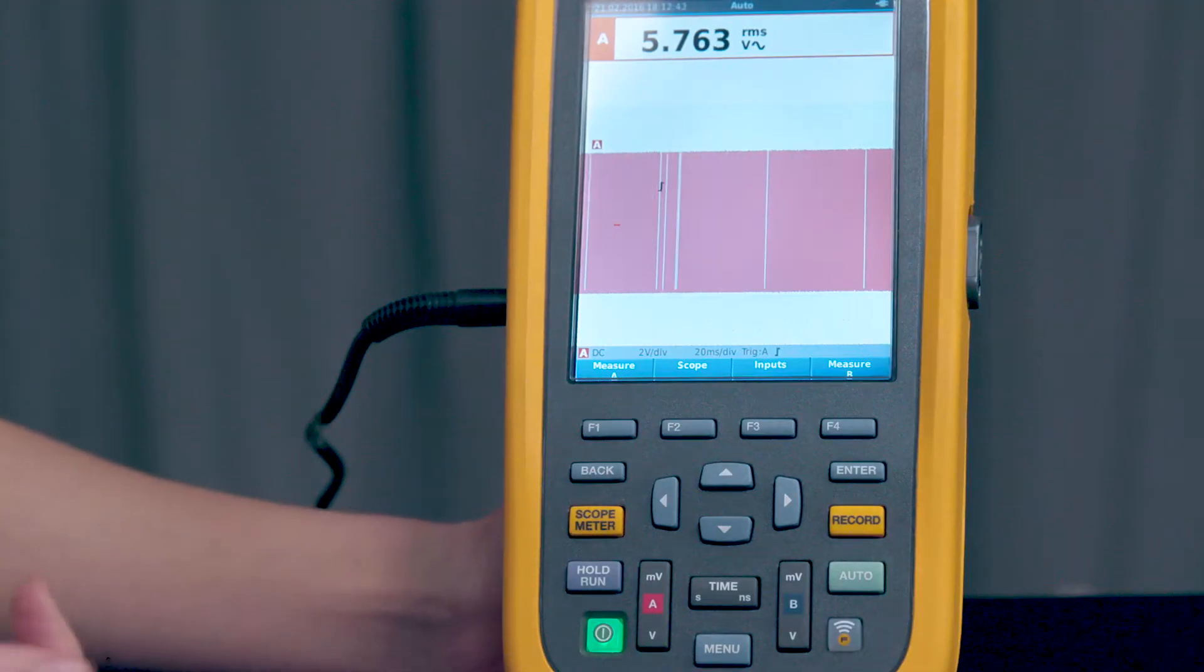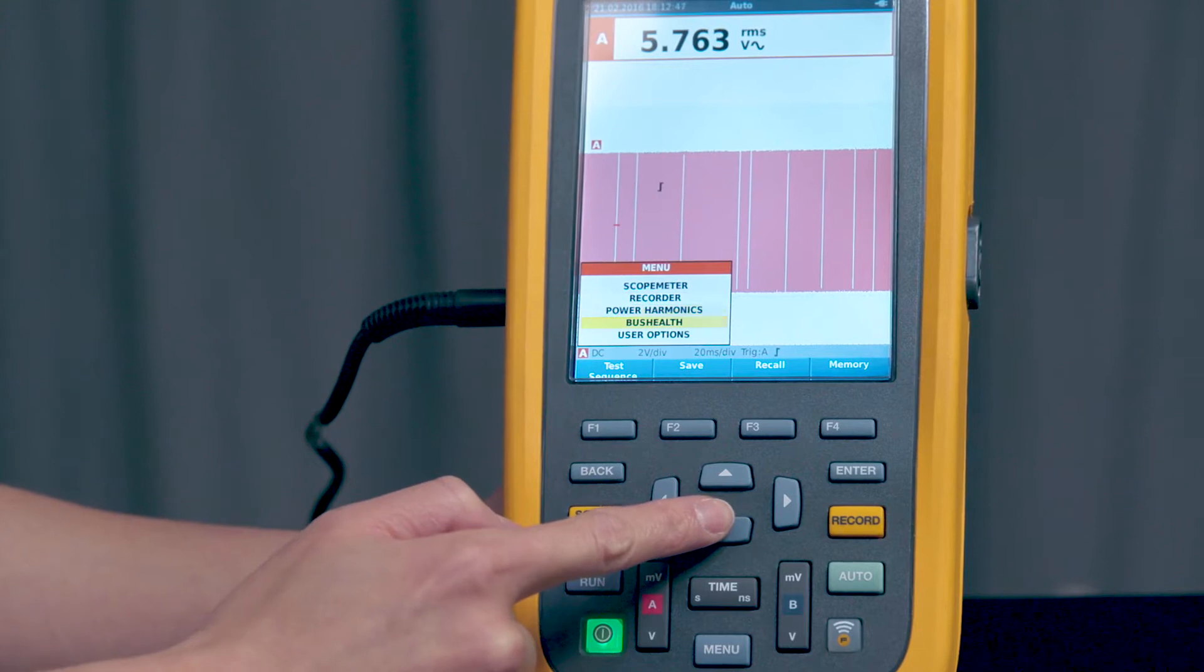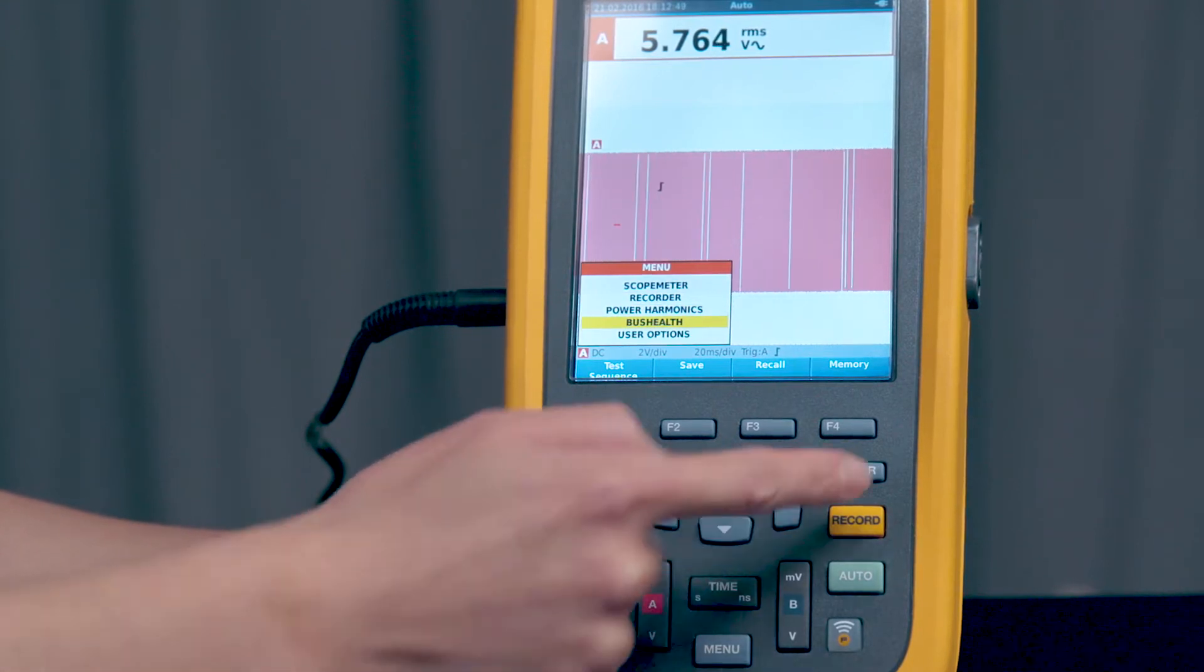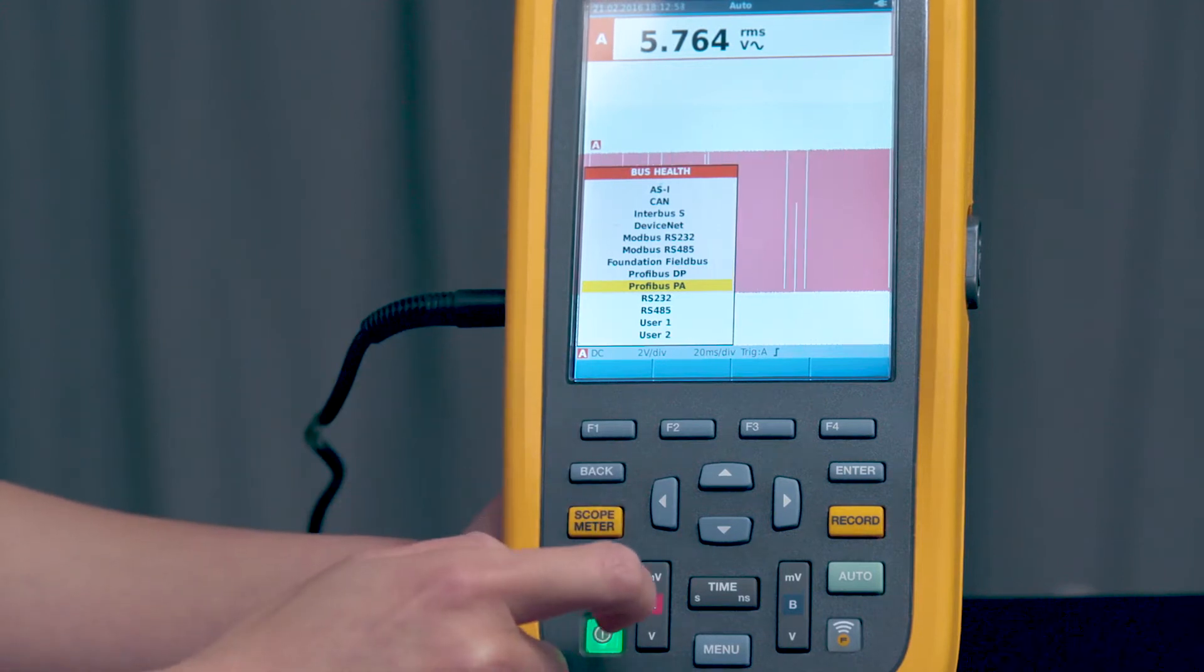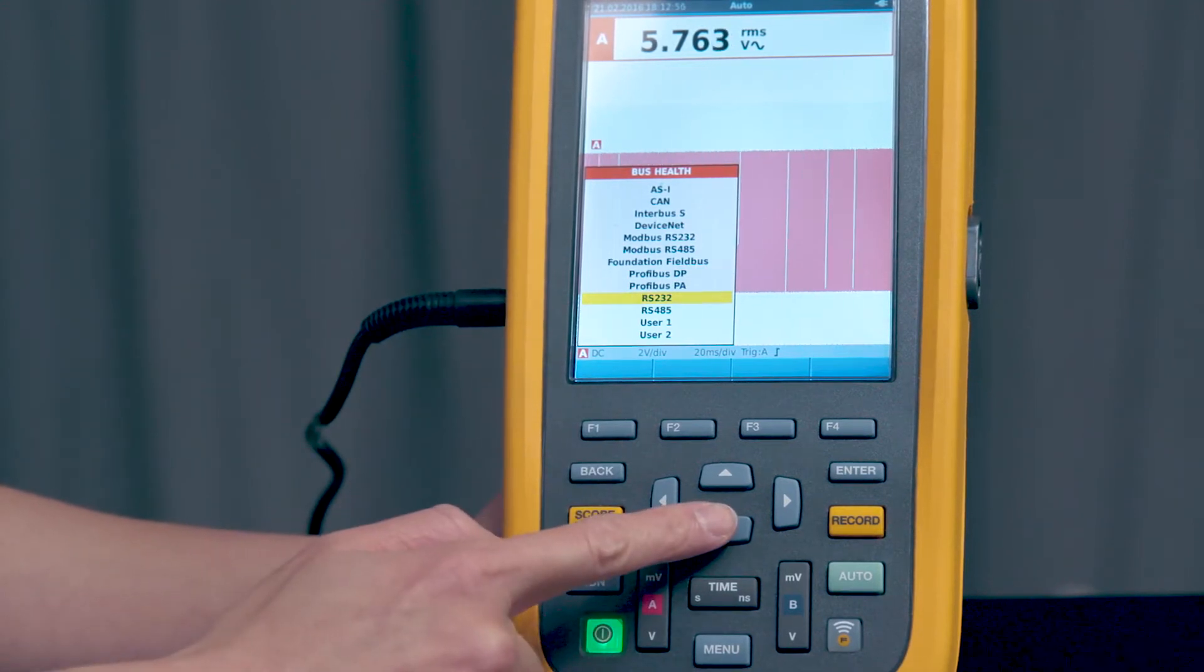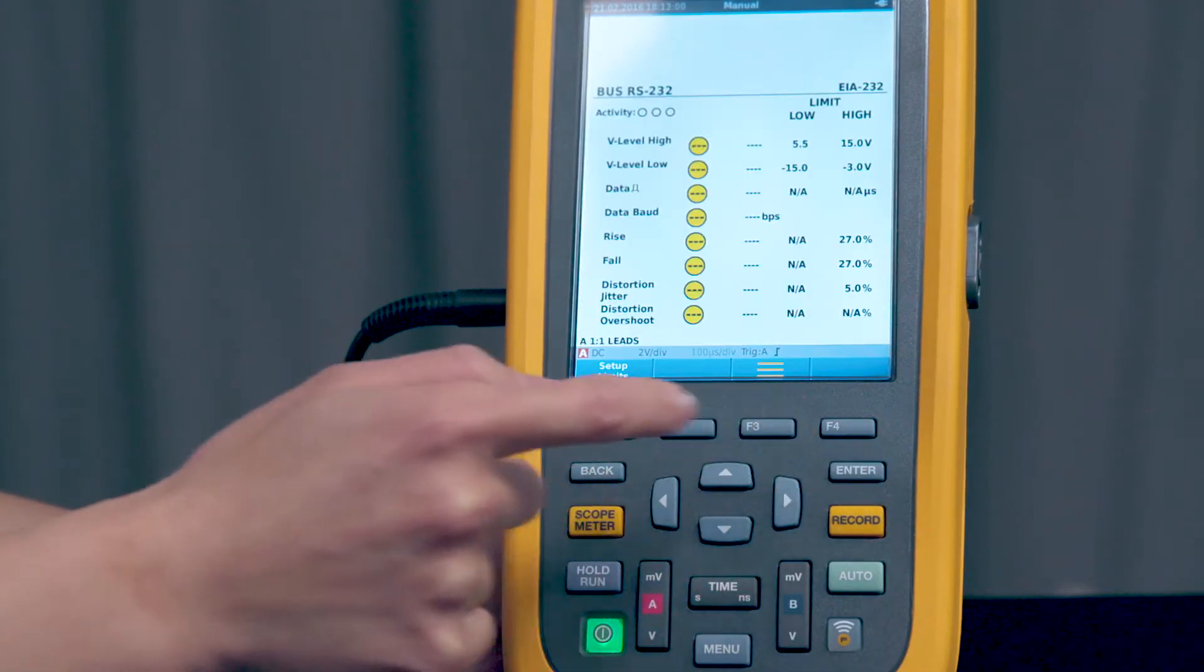To get to bus health mode, press the menu button and then use the arrow key to scroll down to bus health. Once you have it highlighted, press the enter key. You can see here a list of communications that you can choose from. For this demonstration, we're going to take a look at RS-232. Once you have it highlighted, press enter.